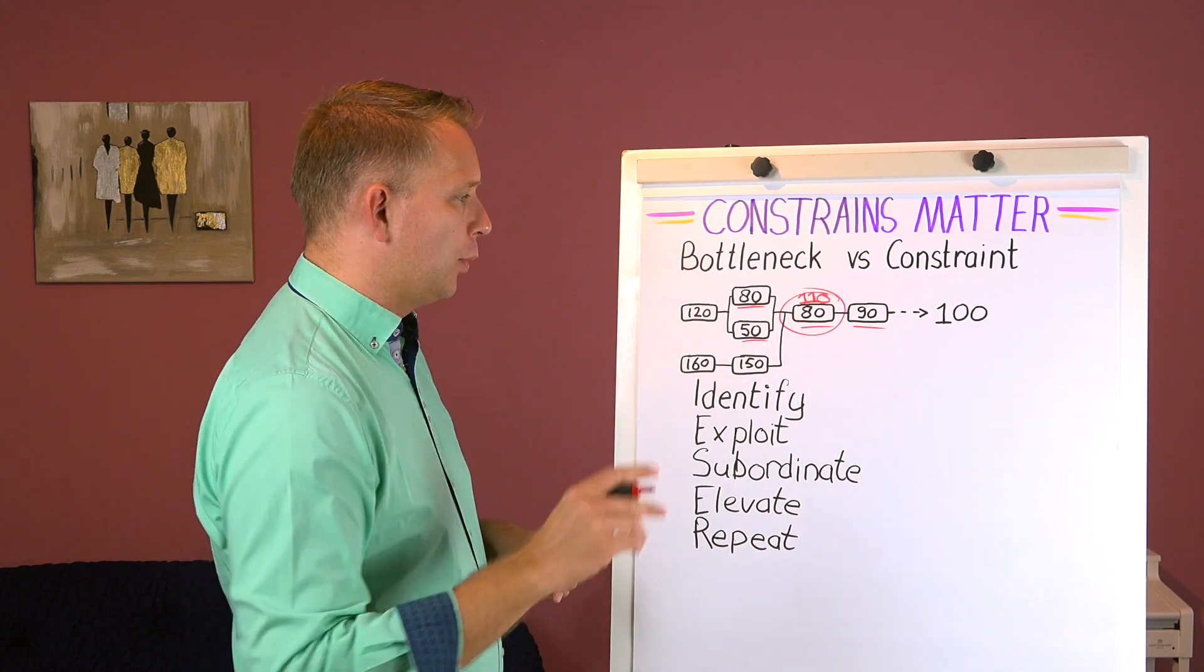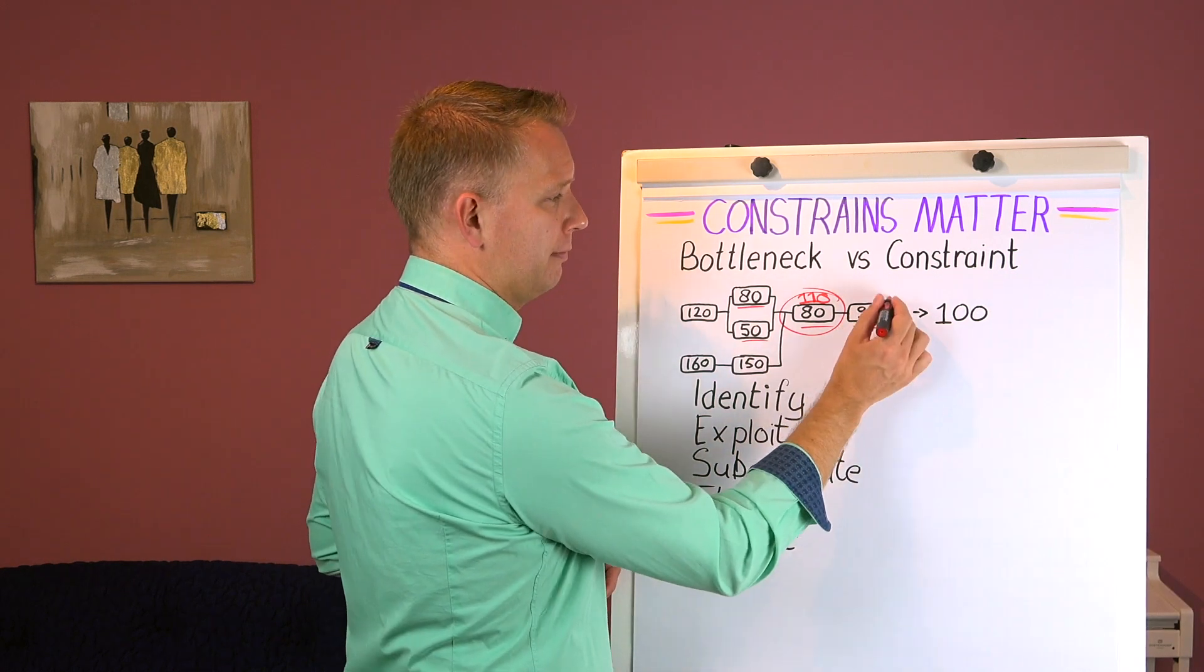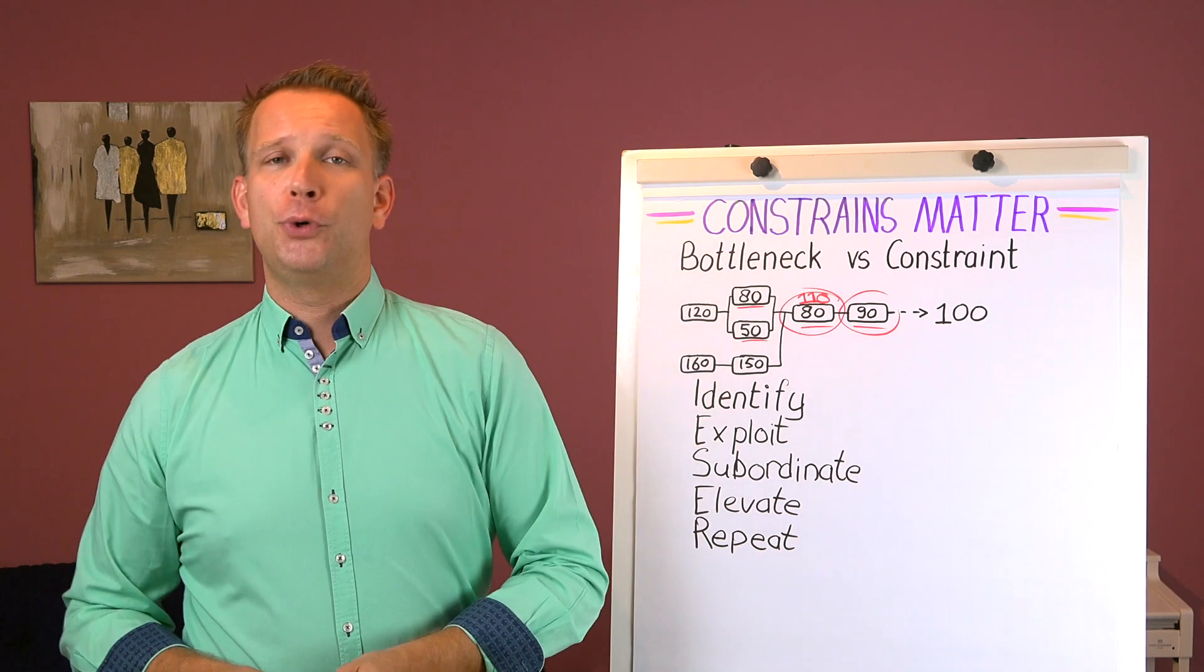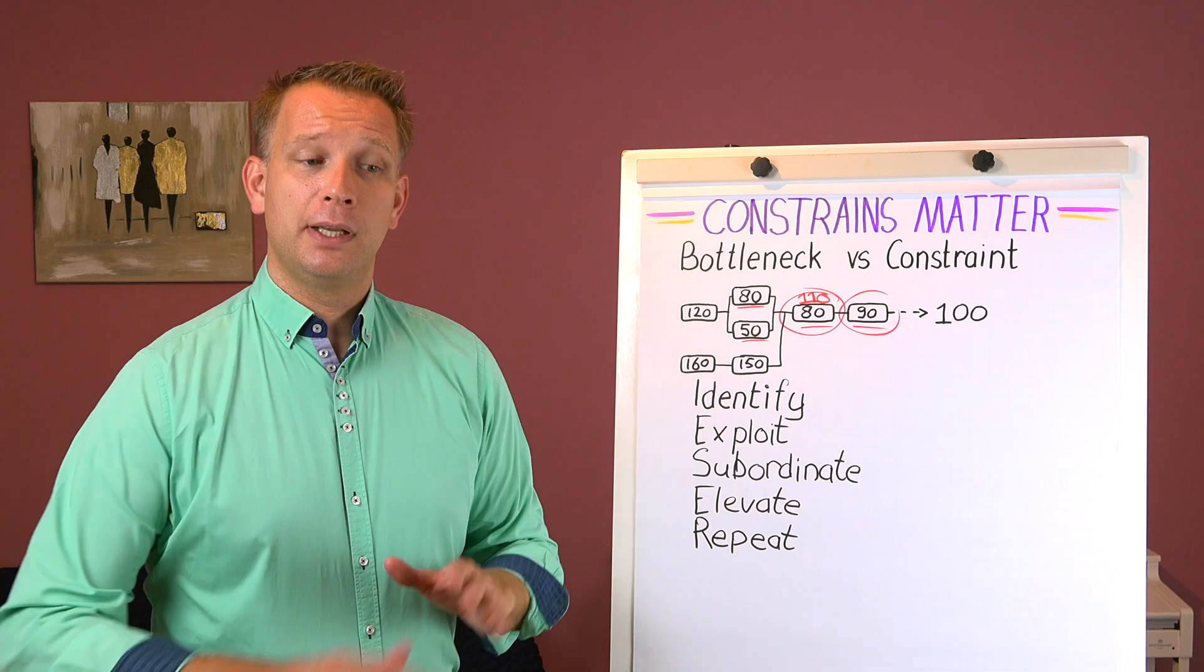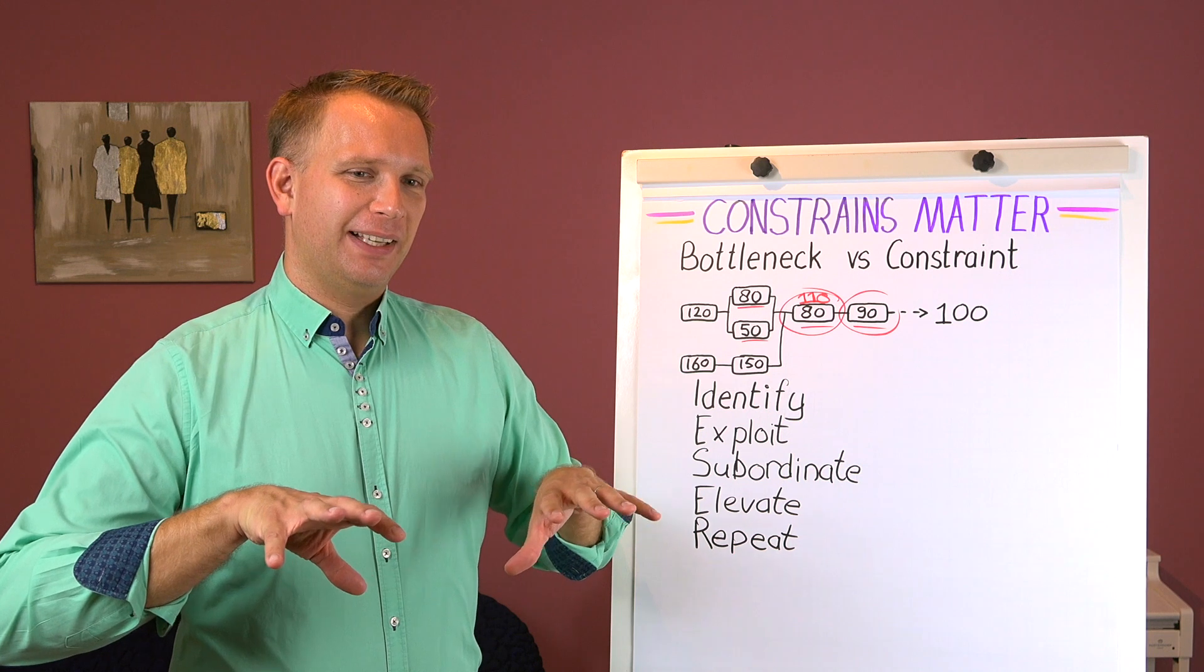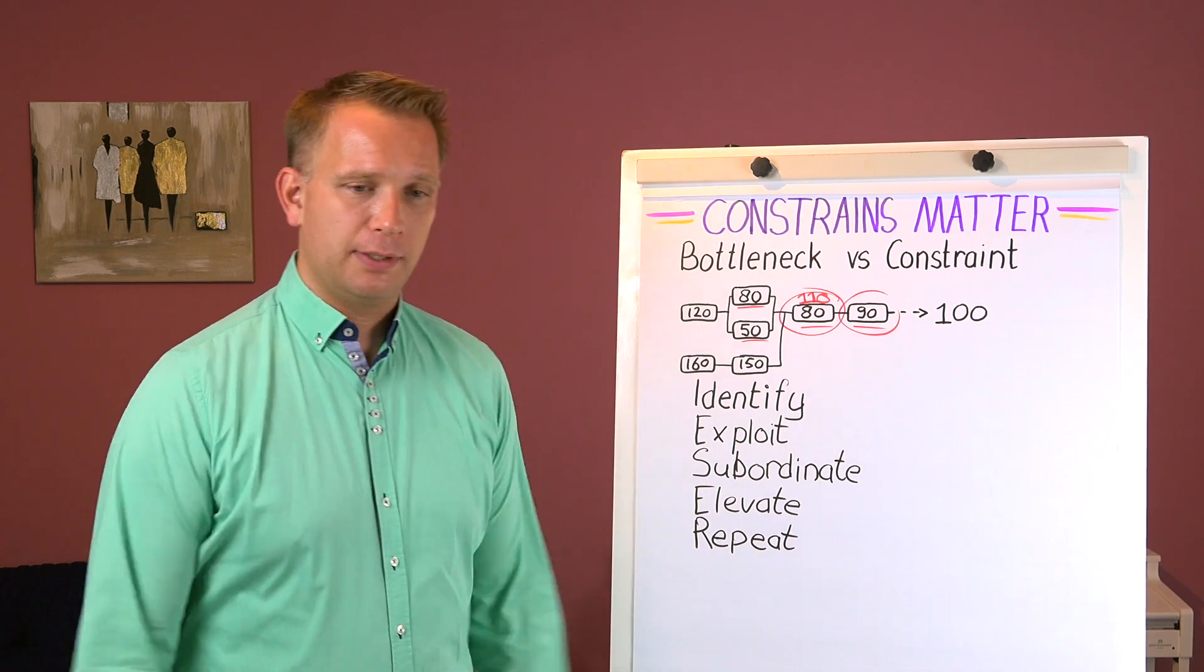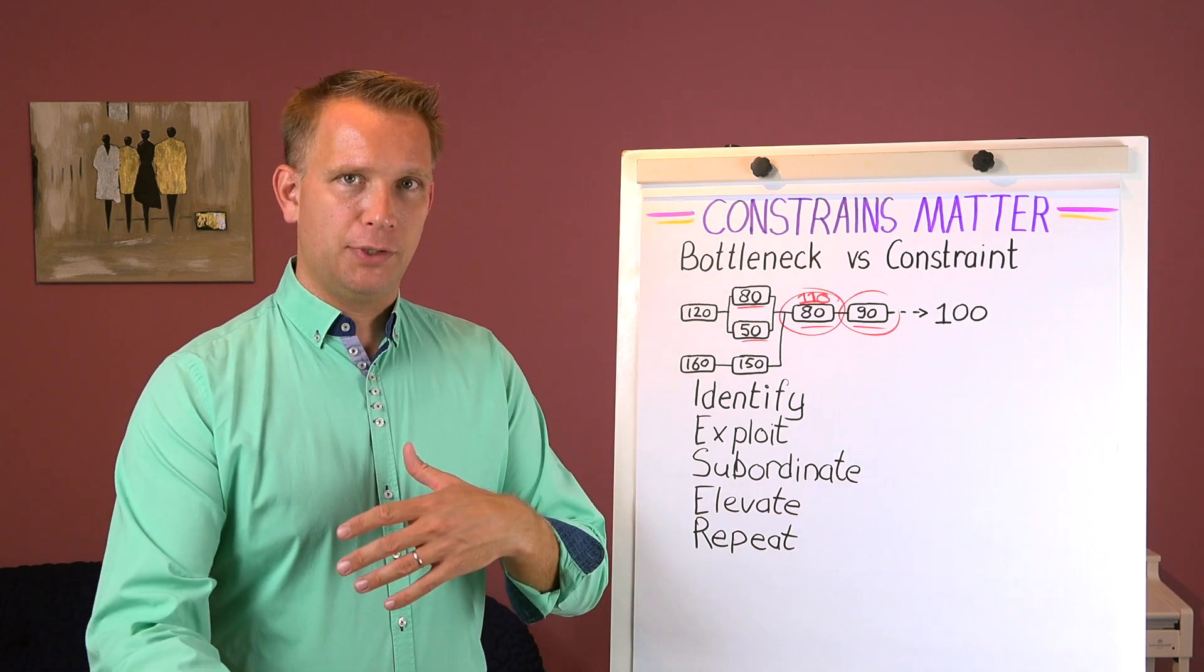We'll make it 110 which means that the new constraint, the constraint moved, the constraint jumped to another process. Now that last part of our complete production process became the constraint and we go through that again. At some point the market will become the constraint which is also nice.